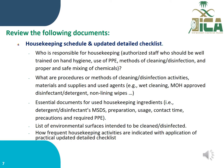Review the following documents: housekeeping schedule and updated detailed checklist. Identify who is responsible for housekeeping — authorized staff who should be well trained in hand hygiene, use of PPEs, methods of cleaning and disinfection, and proper and safe mixing of chemicals. Review procedures and methods of cleaning and disinfection activities, materials, and agents used — for example, MOH-approved disinfectant, detergent, and linen wipes. Essential documents include MSDS for housekeeping agents, covering preparation, usage, contact time, precautions, and required PPEs. Review the list of environmental surfaces to be cleaned and disinfected, and the frequency of housekeeping activities as indicated by updated detailed checklists.